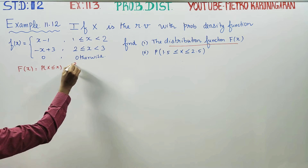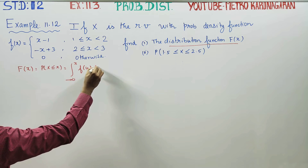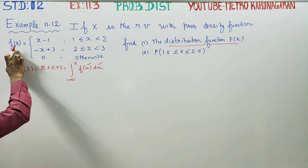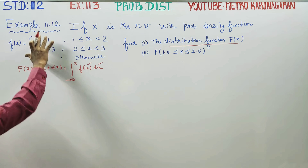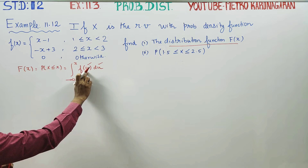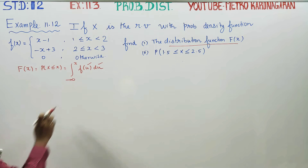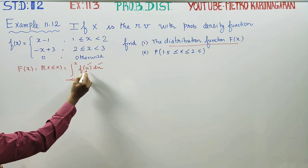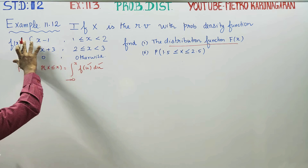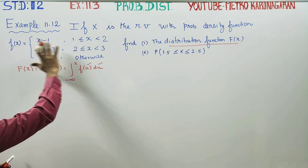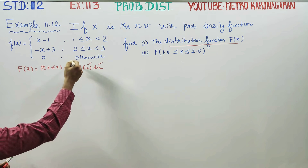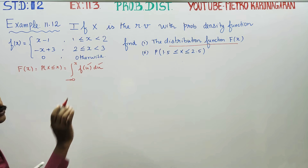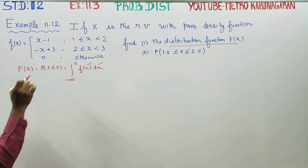The formula is the integral from minus infinity to X of f(u) du. In f(u) du, you might get confused — F of X is the distribution function and the formula uses the variable u. It is just a variable change; u is a dummy variable replacing x in the integrand.